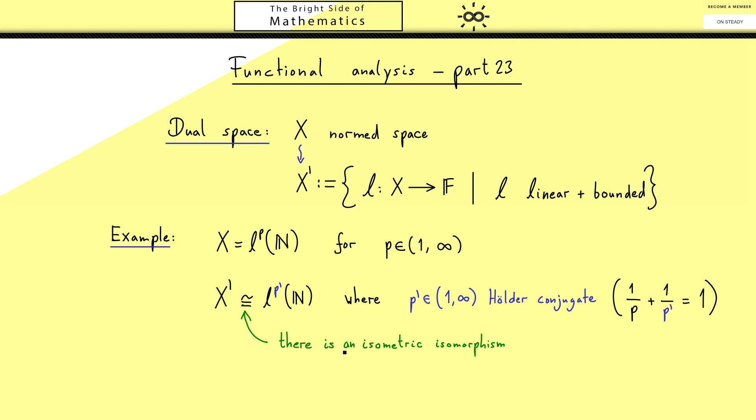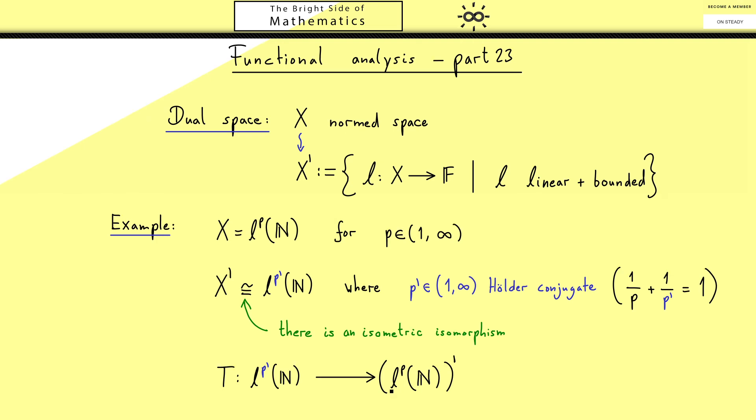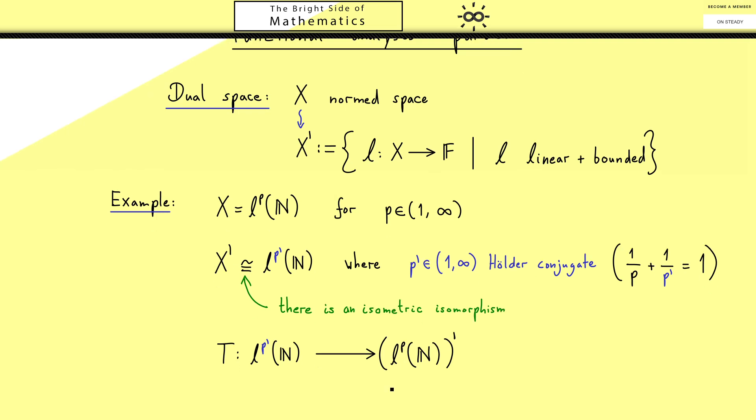This means that we can identify each linear map here with an element in LP prime, and please don't forget isometric means that the norm stays the same. Let's see how we can define such an isomorphism, maybe from the right hand side to the left hand side. So we take a sequence from LP prime and send it to a linear operator with domain LP.